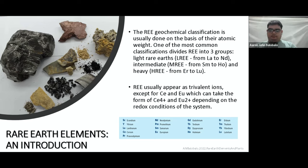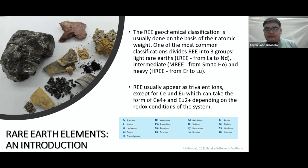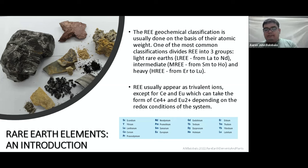Continuing the symbols: EU for europium, GD for gadolinium, TB for terbium, DY for dysprosium, HO for holmium, ER for erbium, TM for thulium, YB for ytterbium, and lastly LU for lutetium.